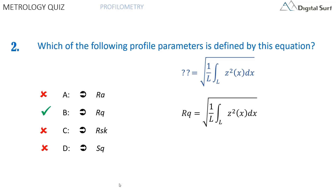The correct answer is B, RQ. RQ is also called the root mean square height and it corresponds to the standard deviation of the height distribution. RA is the mean of the absolute value of deviations. RSK is the skewness parameter and is the normalized third moment. SQ is the equivalent of RQ but on a surface.